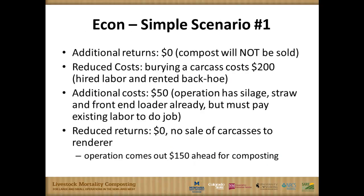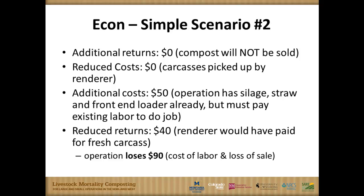Another couple of quick examples: this one looks at additional costs of $50 for that carbon material and then reduced costs of the burial fee of $200. That nets out to $150 net benefit to composting. And then this next example would be one where a producer would use this tool and decide not to compost — an additional cost of silage and labor to do the composting, but then a reduced return of $40 where they were getting paid for that carcass off-site. So in this situation, they'd be $90 behind by switching to compost, so they wouldn't switch to composting under that scenario.